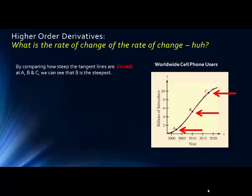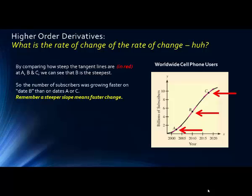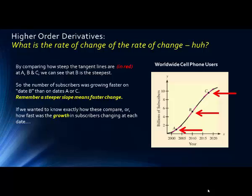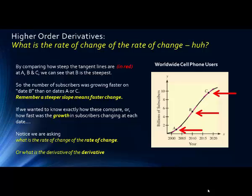By comparing how steep the tangent lines are in red at A, B, and C, we can see that B is the steepest. So the number of subscribers was growing faster on date B than on dates A or C. Remember, a steeper slope means faster change. If we wanted to know exactly how those companies compare, or how fast the growth in subscribers is changing at each date, notice we are asking what is the rate of change of the rate of change, or what is the derivative of the derivative.